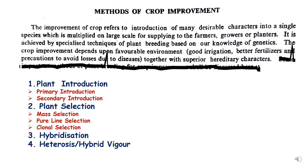Plant breeding refers to methods used in crop improvement. The improvement of crop involves introducing many desirable characters in a single species, which is then multiplied on a large scale for supplying to farmers, growers, or planters. This is achieved by specialized techniques of plant breeding based on knowledge of genetics.